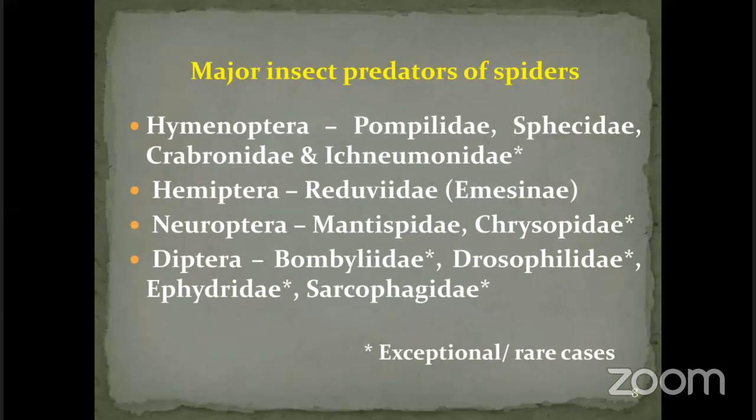In Diptera, Bombyliidae (bee flies), Drosophilidae, Ephydridae, and Sarcophagidae are all exceptional cases as egg predators — they are all acting as egg predators of spiders.